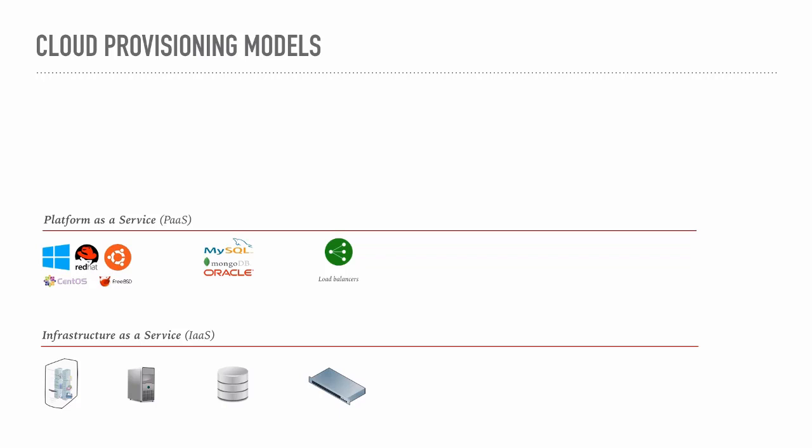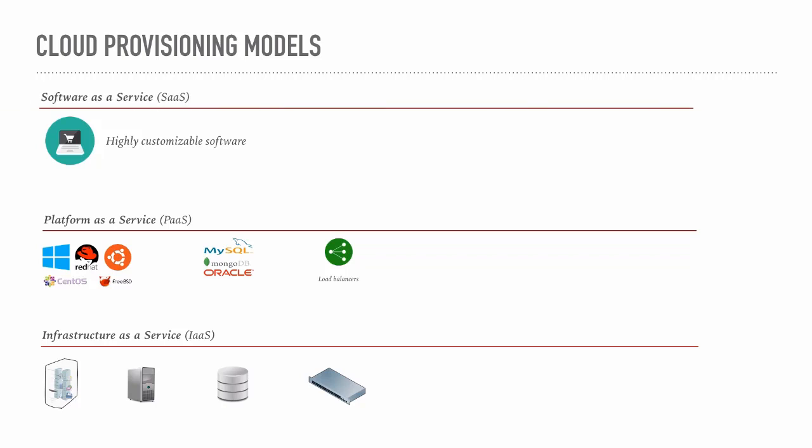If you want the cloud provider to provide you with even more services, you can have the last model, which is the software itself — called Software as a Service or SaaS. The cloud provider in this scenario is going to offer you a ready-made but highly customizable software. Think of it, for example, as a dentist that needs a virtual clinic online where patients can log in, view reports, book new visits, see their history and transactions. This dentist can opt to rent Software as a Service from a cloud provider — software which creates a dentist clinic on the cloud and is highly customizable. The dentist can add his or her own logo, change the business logic, how customers are billed, the times when he is available or on vacation, and so on.